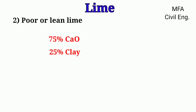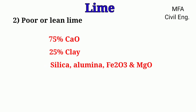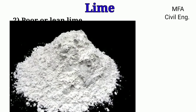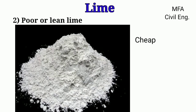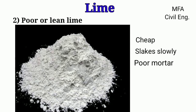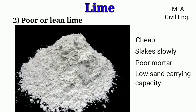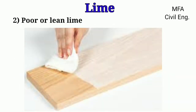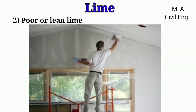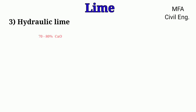Poor lime contains 75 percent calcium oxide and 25 percent clay. It also contains very small amounts of silica, alumina, ferrous oxide, and magnesium oxide. Poor lime has various properties: it is cheap, slakes slowly, makes a poor mortar, is muddy white in color, and has a low sand carrying capacity.